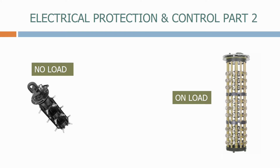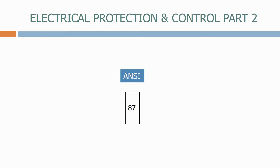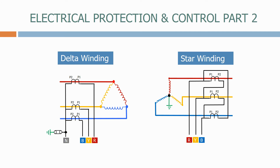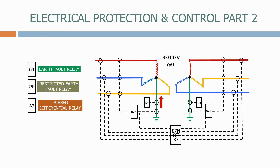Transformer tap changers are used to alter the voltage on the network. In the next section we will look at the main types of tap changers that we use. We will then introduce the principles behind biased transformer differential protection and look at the bias curve to understand why it is required. In the final section on transformers we will look at how we connect the current transformers for the various differential schemes, and then complete the section by looking at how we pull all the transformer protections together.